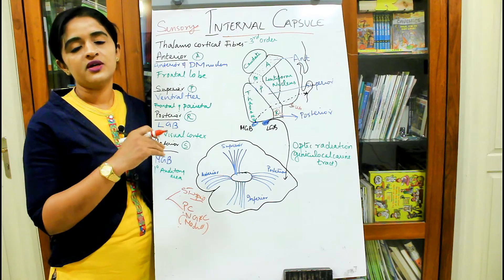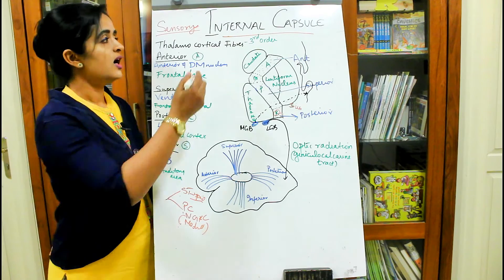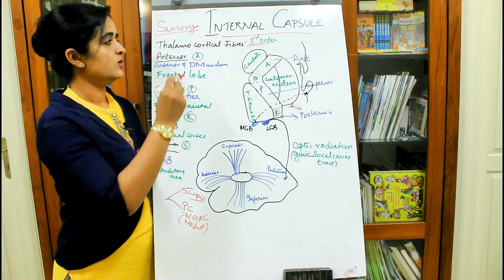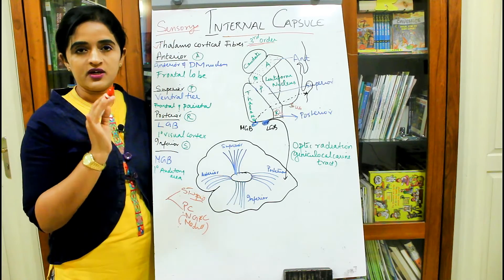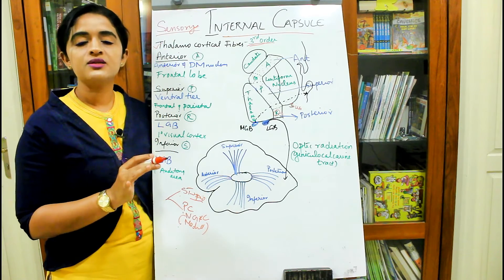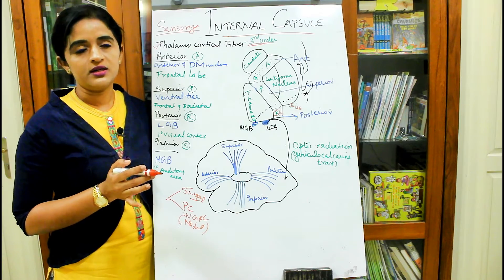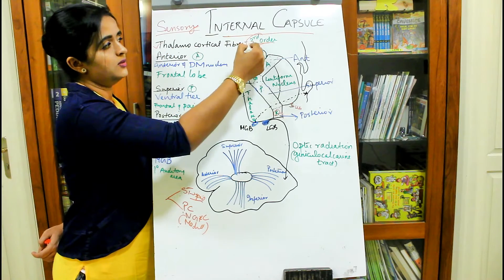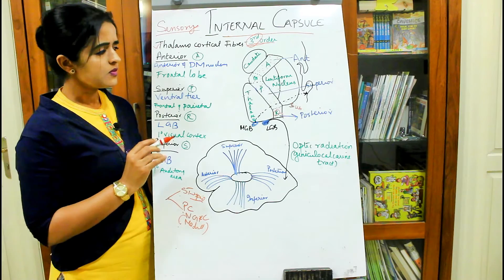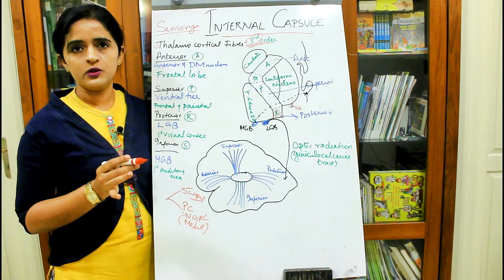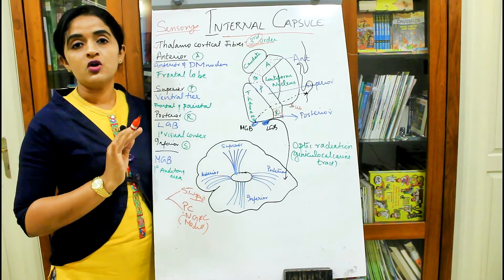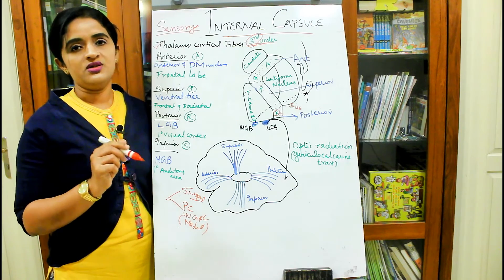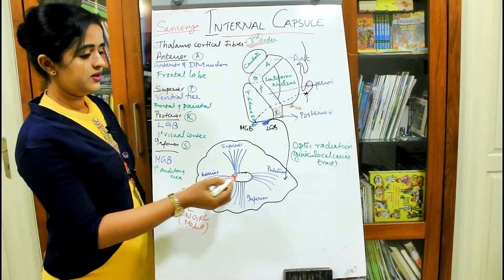From the thalamus, another set of neurons arises. Whether spinothalamic or posterior column fibers, the second-order neurons reach the thalamus, and the fibers projected from the thalamus to the sensory regions of the cerebral cortex are always third-order neurons. These are known as thalamocortical fibers, and we are going to look at how they are projected through the internal capsule.